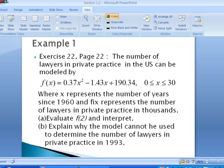Let's take a look at an example of one of these mathematical models. On page 22, in exercise 22, it says that the number of lawyers in private practice in the U.S. can be modeled by the quadratic function f(x) = 0.37x² - 1.43x + 190.34, and the reasonable domain is the x values from 0 to 30. Here, x represents the number of years since 1960, and f(x) represents the number of lawyers in private practice in thousands. In part A, we want to evaluate f(2) and interpret.